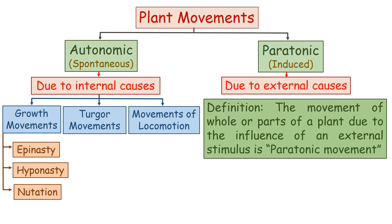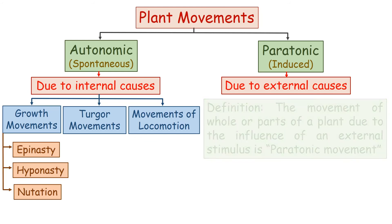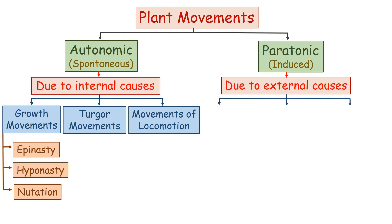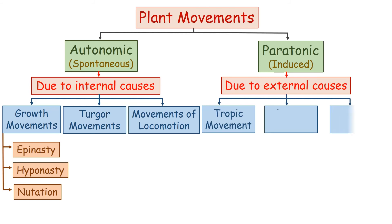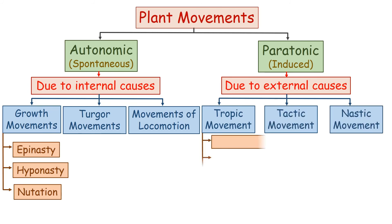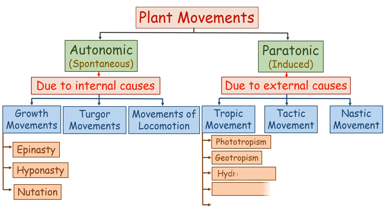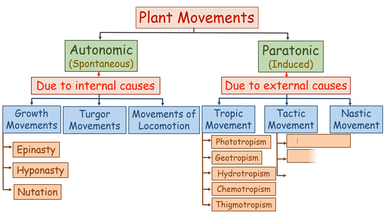Three types of paratonic movements are tropic movement, tactic movement, and nastic movement. These movements are further classified on the basis of the type of stimulus. Watch the next video to learn about paratonic movements.